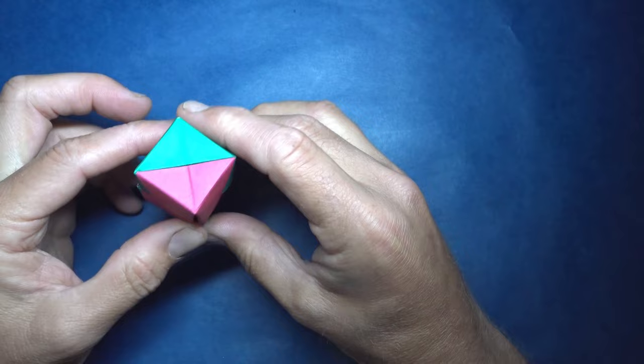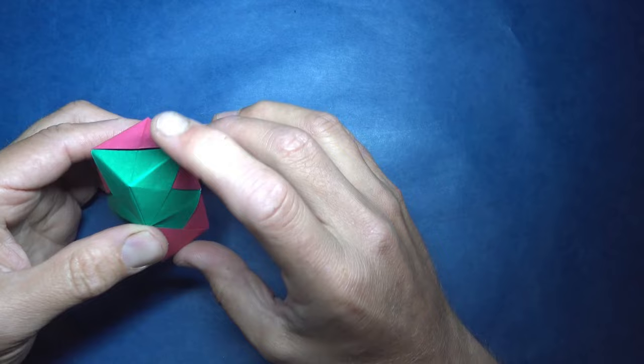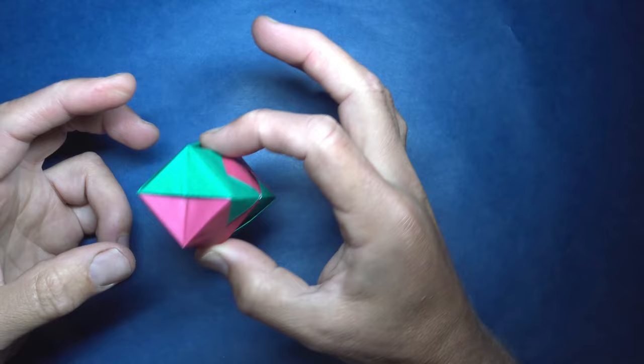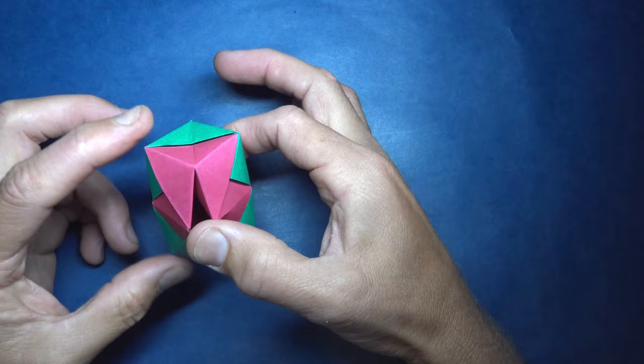And then press these two points and these two points like that. So we're starting out like this and once it exercises really well and gets used to doing this, then you can just press right here and it should flip like that. So you can just press only two corners and it switches.